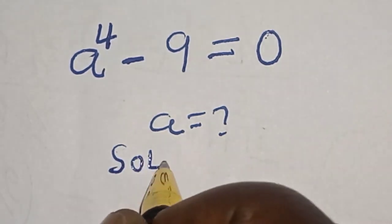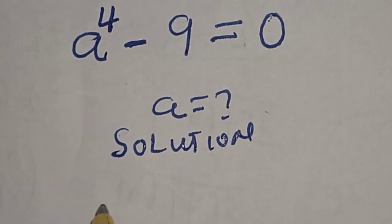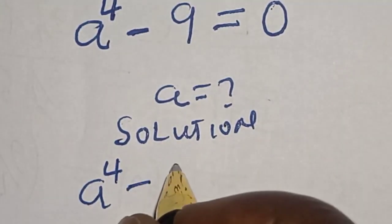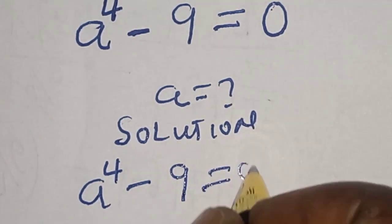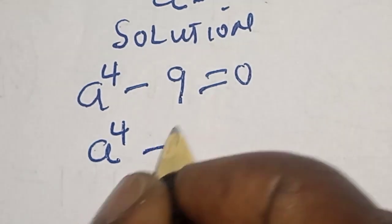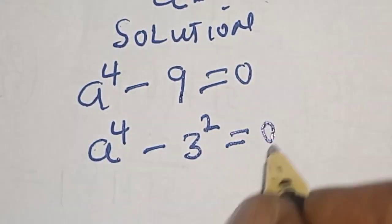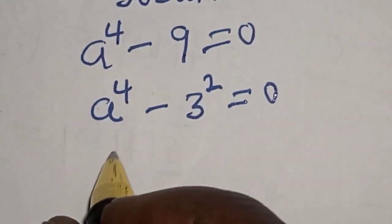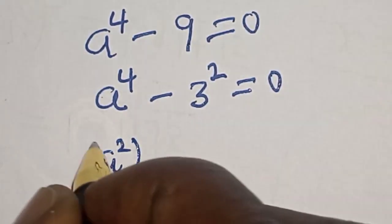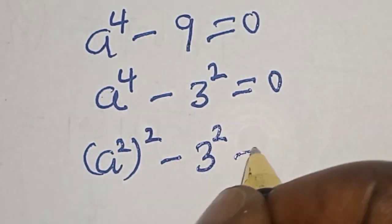Solution. A raised to power 4 minus 9 is equal to 0. A raised to power 4 minus 9 is 3 squared, equal to 0. And a raised to power 4 is the same thing as a squared, squared, minus 3 squared, equal to 0.